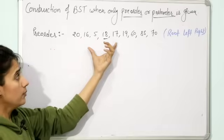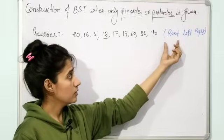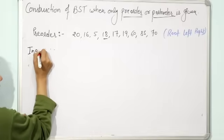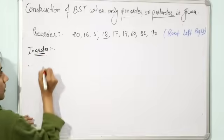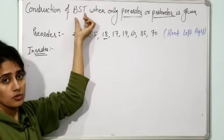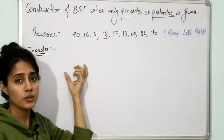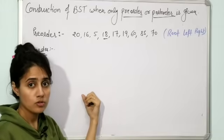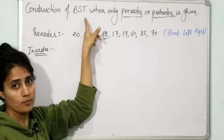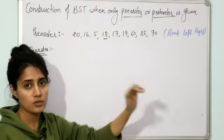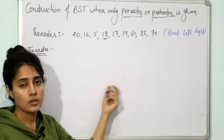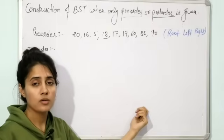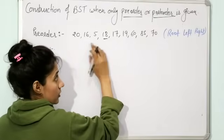Now only pre-order is given. We know that in pre-order traversal, first of all the root is traversed, then left, then right. Now how to find out the in-order traversal of this tree? The in-order traversal of a binary search tree will always be in ascending order — sorted data will be there. I am talking about binary search tree only, not any binary tree. This condition is true only for binary search tree.